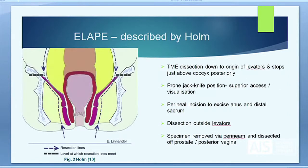This diagram taken from Holm's paper shows the abdominal portion, with blue lines coming in at the top and meeting the perineal portion. The perineal dissection begins once the abdominal dissection has reached the pelvic floor on the lateral side walls in the holy plane. The patient's abdomen is then closed and the stoma formed before the perineal dissection begins.